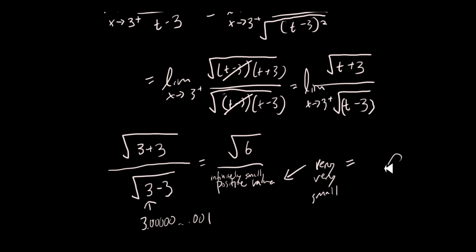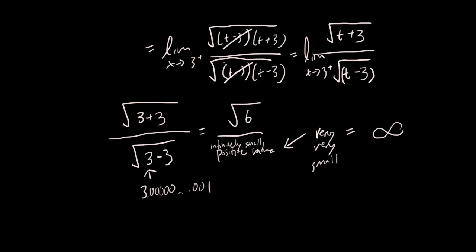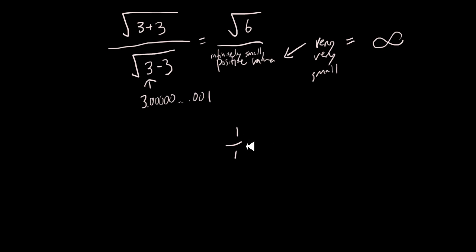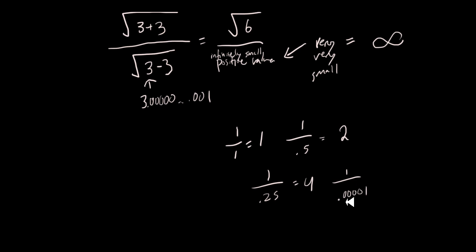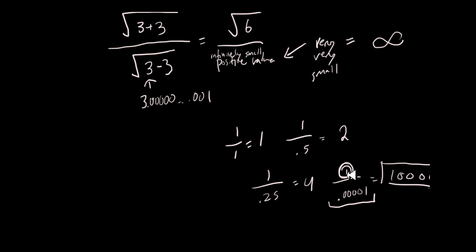The top part becomes the square root of 6, and the bottom part is an infinitely small positive value. When the denominator is very very small, the answer becomes infinite. For example: 1 over 1 equals 1, 1 over 0.5 equals 2, 1 over 0.25 equals 4 — so the smaller the denominator, the bigger the result.